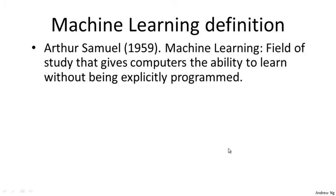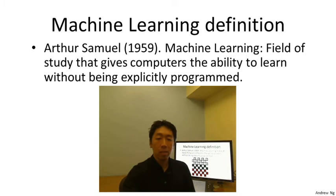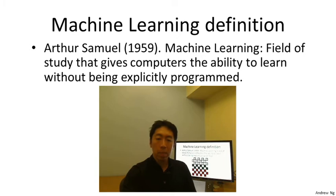Samuel's claim to fame was that back in the 1950s, he wrote a checkers playing program. The amazing thing about this program was that Arthur Samuel himself wasn't a very good checkers player. But what he did was he had the program play tens of thousands of games against itself. By watching what sorts of board positions tended to lead to wins and what sort tended to lead to losses, the checkers playing program learned over time what are good board positions and what are bad board positions, and eventually learned to play checkers better than Samuel himself.